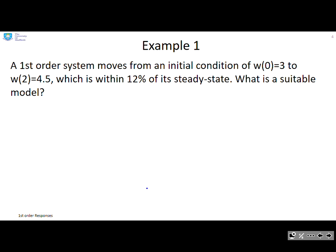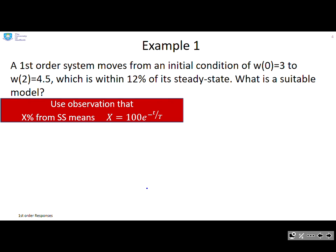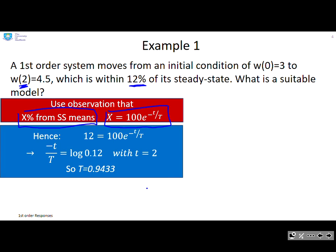Use the observation that if you're x percent from the steady state, you've got a formula x equals 100 times e to the minus time over time constant. This is useful because we've been given the time, it's 2, and x is 12 percent, so we can use that formula to work out the time constant. We write 12 equals 100 e to the minus t over T. Take logs of both sides, plug in t equals 2, and that gives the time constant T equals 0.9433.